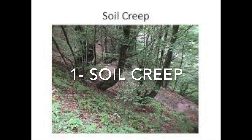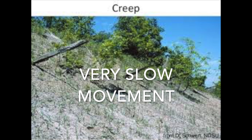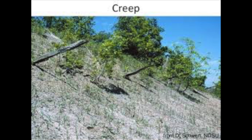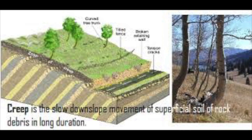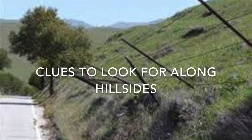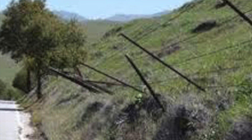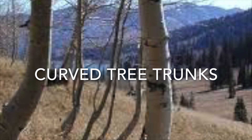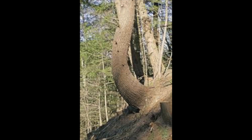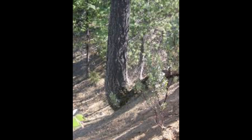The first type is called soil creep. Soil creep involves very slow movement — the slow downslope movement of superficial soil or rock debris over a long duration. There are several clues to look for along hillsides to know that soil creep has occurred. One clue is curved tree trunks. As the soil moves, the trees bend to remain upright, and the tree trunks take on a curved appearance.